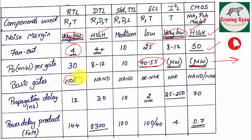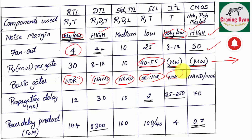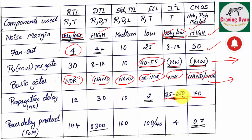The basic gates used: RTL uses NOR gates, DTL uses NAND gates, standard TTL uses NAND gates, ECL uses OR and NOR, I²L uses NOR gates, and CMOS uses both NAND and NOR — which are the universal gates. Propagation delay is higher in CMOS and even higher in I²L. Since ECL offers very high speed, its propagation delay is the lowest. The power-delay product, given as the figure of merit, is highest for DTL and lowest for CMOS.